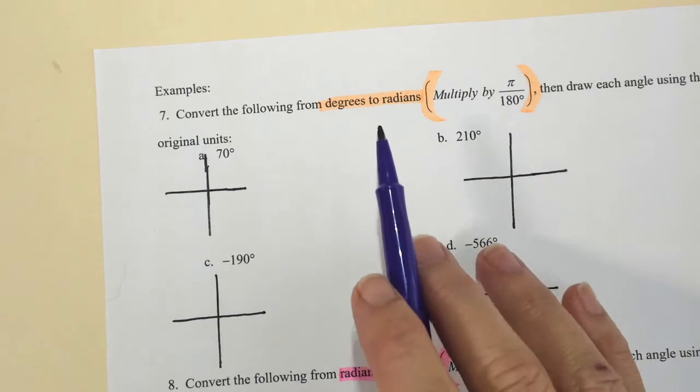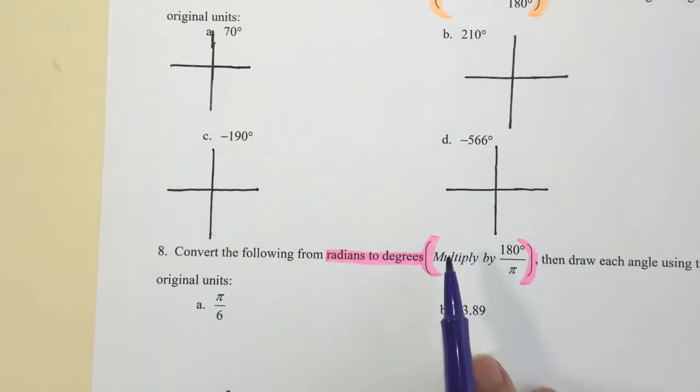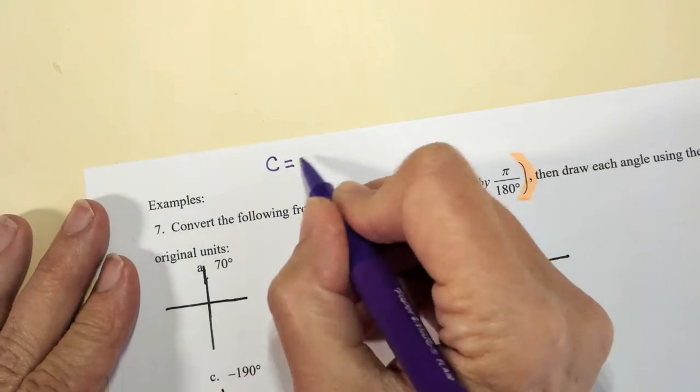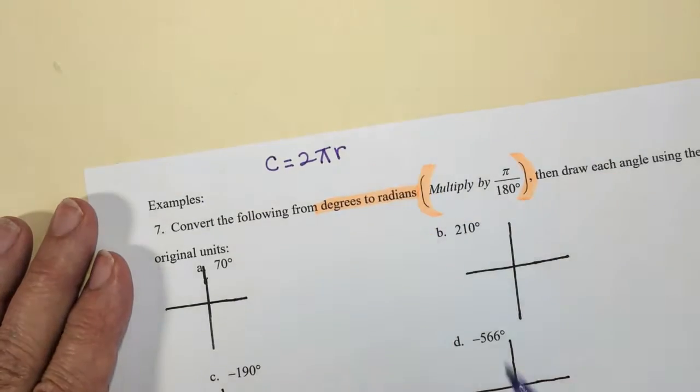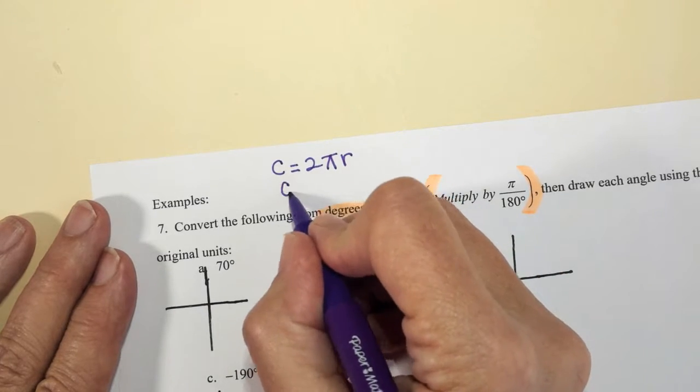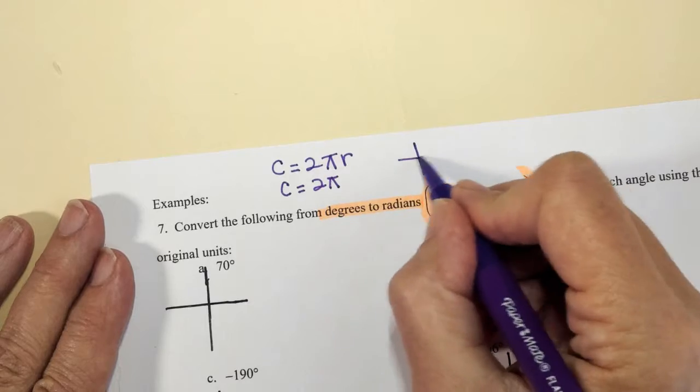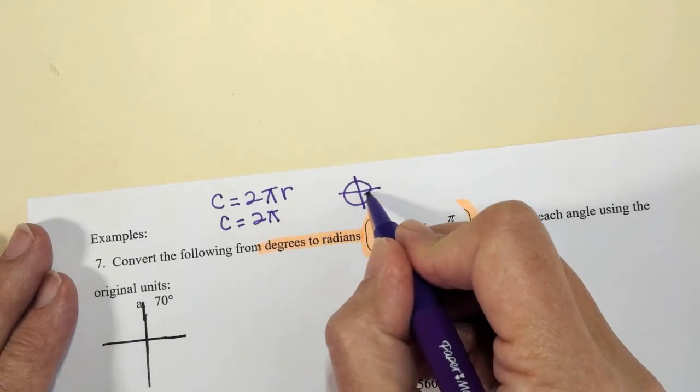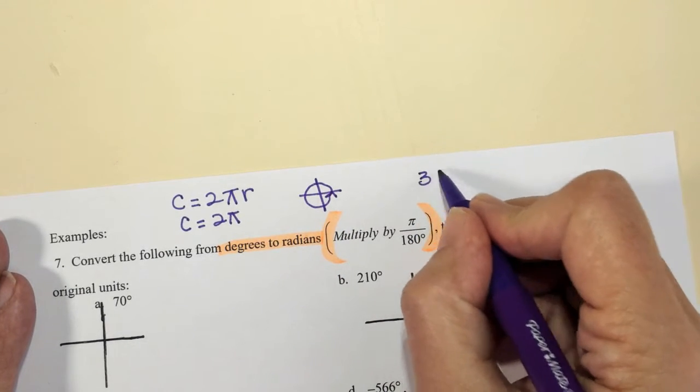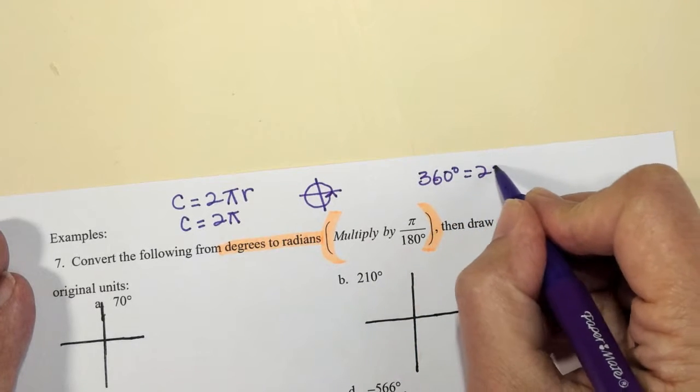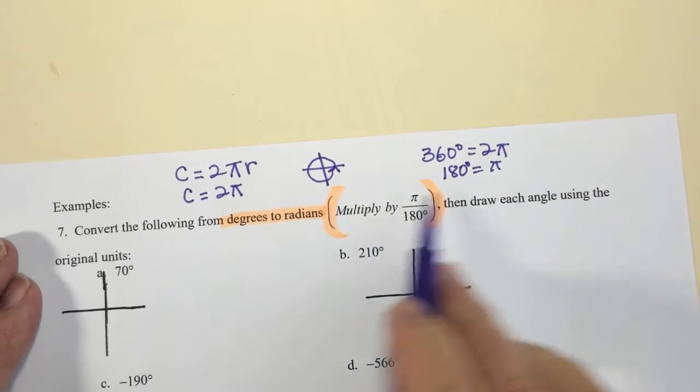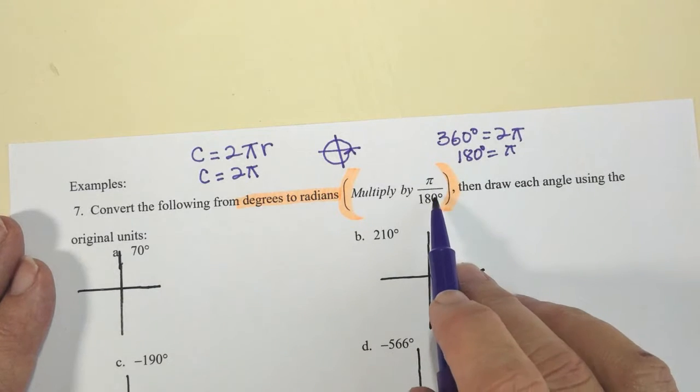This video is to help you with converting degrees to radians and radians to degrees. To start out, we know that the circumference of a circle is 2πr, so if we're thinking about having a unit circle then our radius is 1, so we know that the circumference is 2π. If I go around an entire circle my circumference is 2π, which is also 360 degrees, so 360 degrees equals 2π. So I know that π is 180, and this is where our whole unit circle comes from.